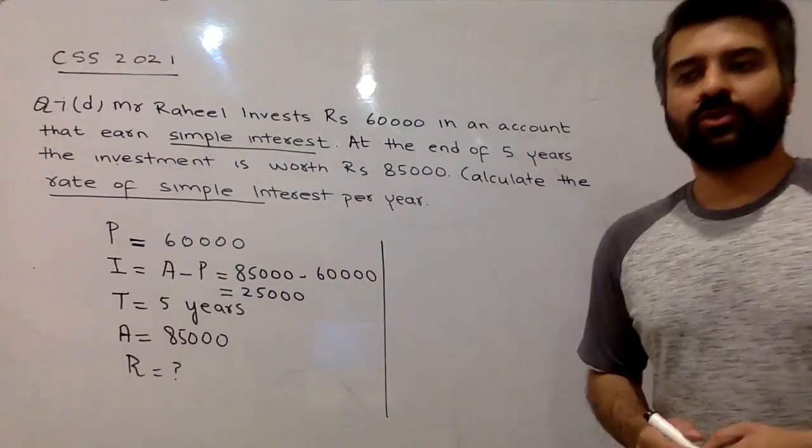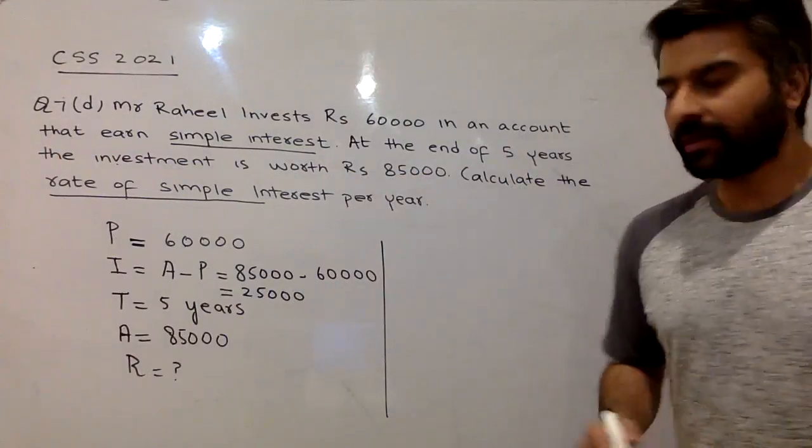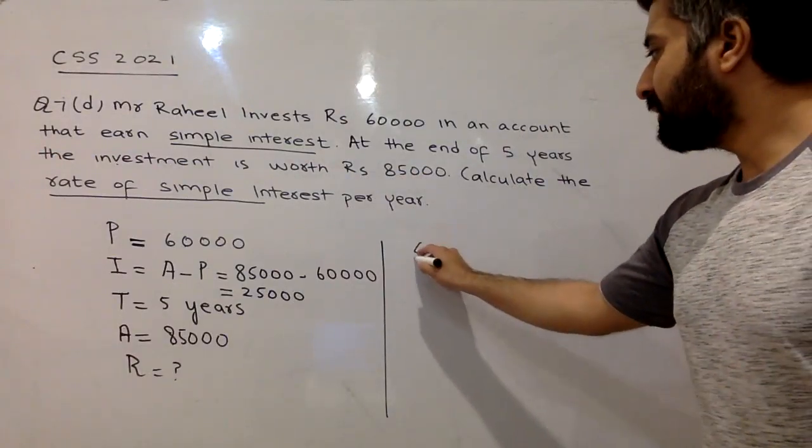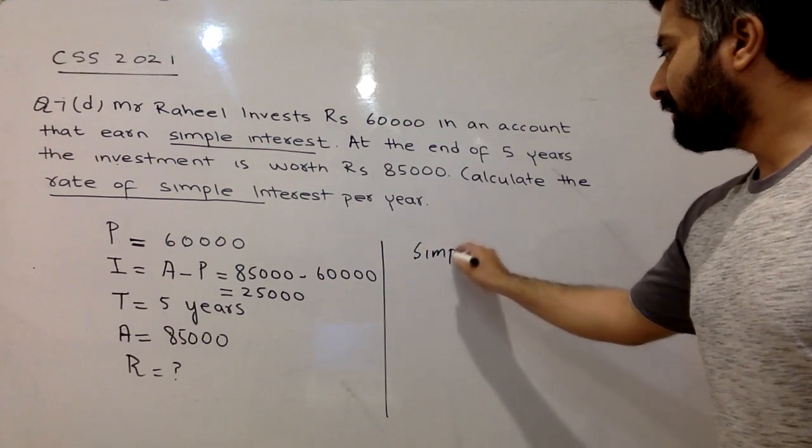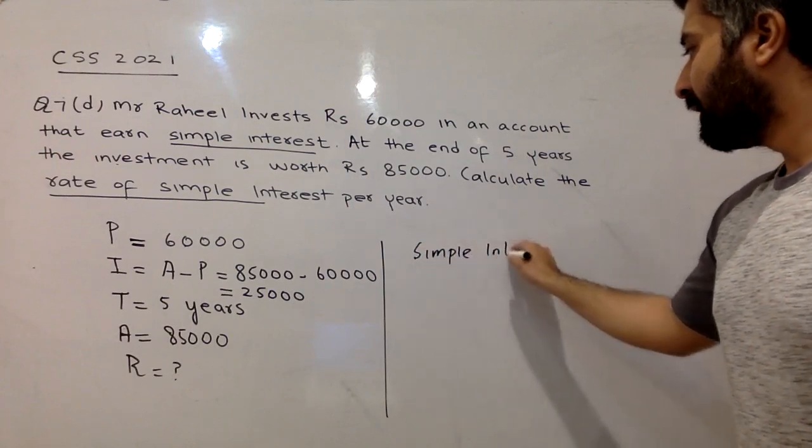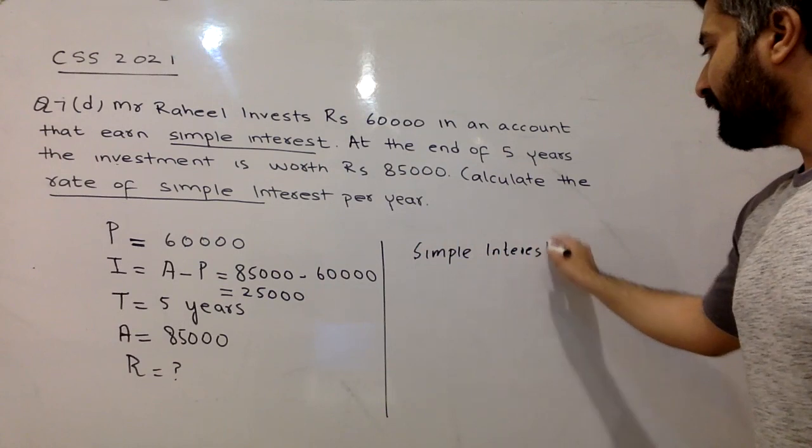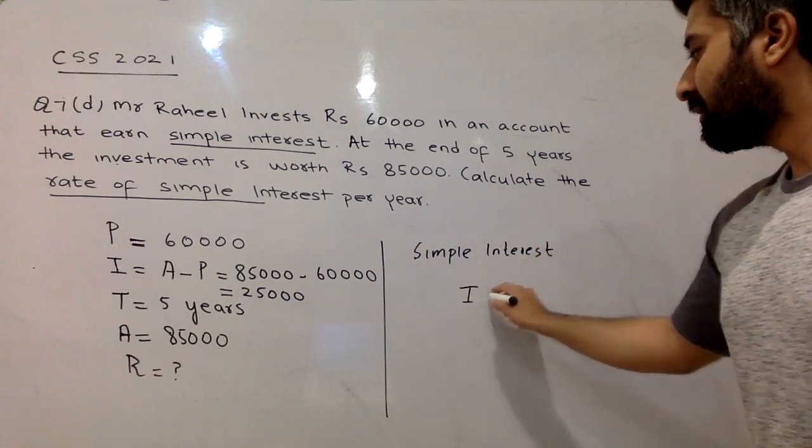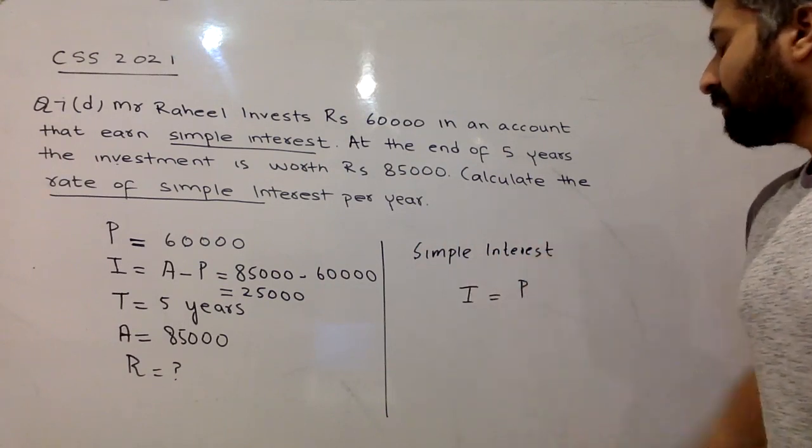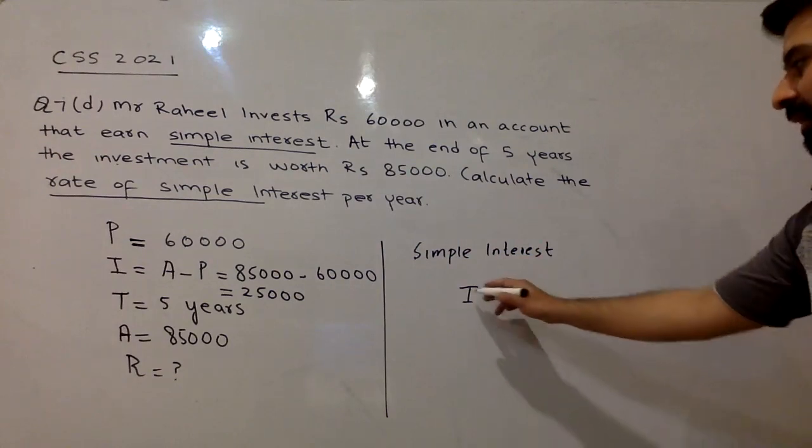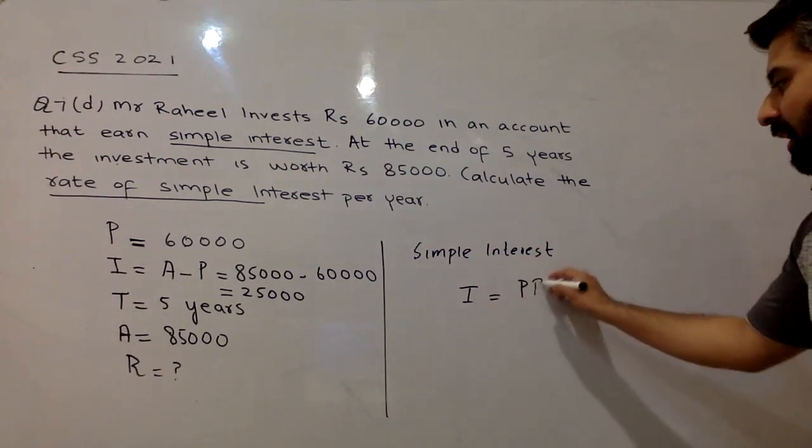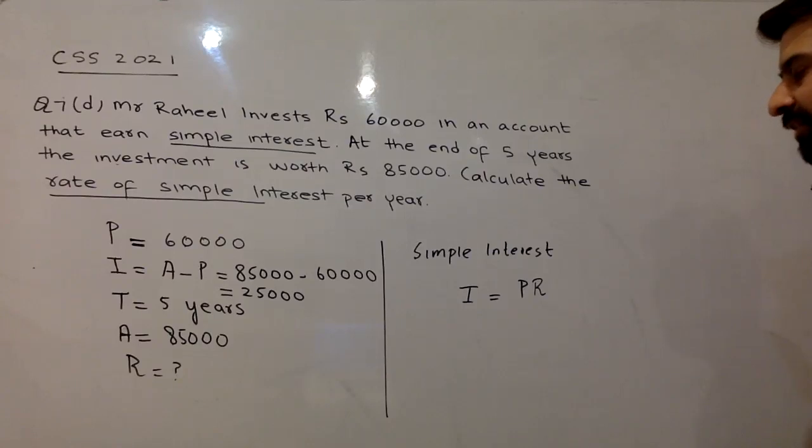So simple interest is basically given by simple interest I = PRT/100. P is principal amount, I is amount of interest, R is rate of interest, T is time of investment.